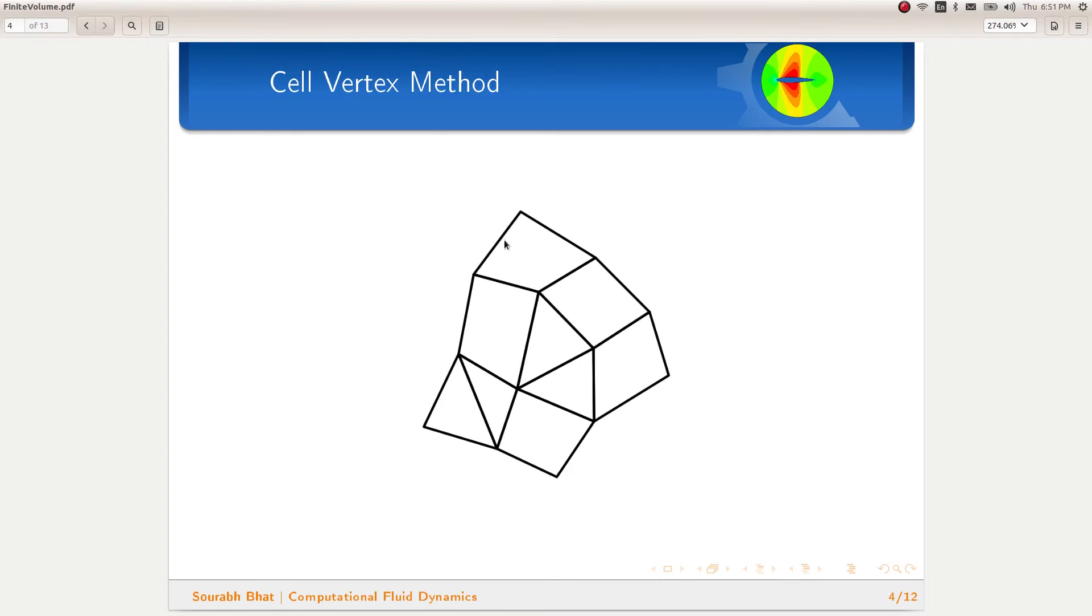The cell vertex method uses a secondary mesh made up of a cell for every vertex. Given a mesh produced by the meshing software, which is shown in black color here, we have to first generate a new cell for every vertex by joining the centroids, which is drawn in blue color here. The finite volume formulation is applied on these newly generated cells. The advantage of the cell vertex method is that the application of boundary conditions becomes easy because the cell centroids lie on the boundaries.